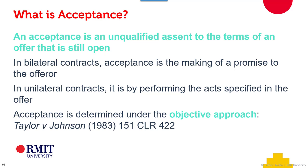So what itself is an acceptance? An acceptance is an unqualified assent, an unqualified agreement to the terms of an offer that is still open. That's the offer that's still open, not the acceptance that's still open. Offers have a period of time. Acceptance, once it happens, it's happened and we've got an agreement.